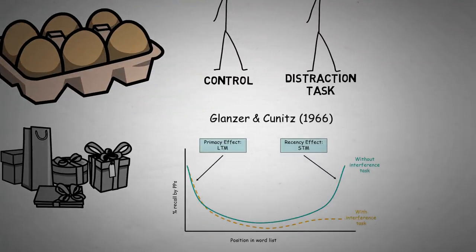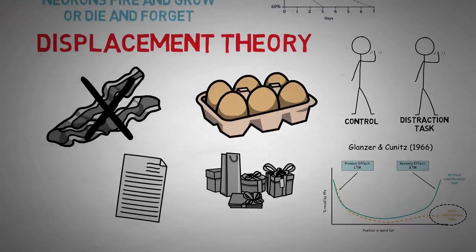Now, the results from both of these groups supported the serial position effect. The information at the beginning and the end was more likely to be recalled by participants. However, the group that completed the distraction task were much less likely to recall the items at the end of the list. Psychologists figured that those items were stored in short-term memory, but with the distractions, they were displaced quickly. The distraction task displaced all of the original list. This theory of forgetting is called the displacement theory.